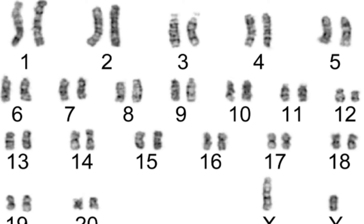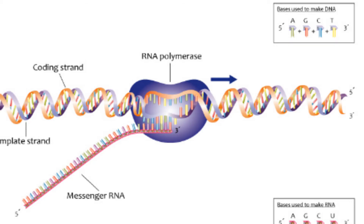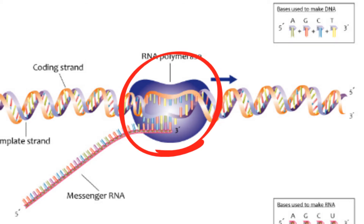Let's look at how it works. Creating a protein begins when the DNA unzips and RNA polymerase attaches to the DNA and starts creating a strand of mRNA, or messenger RNA.